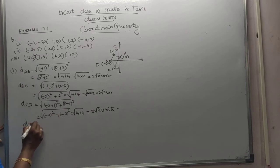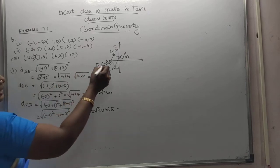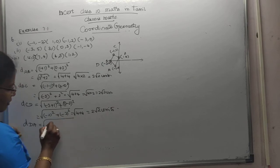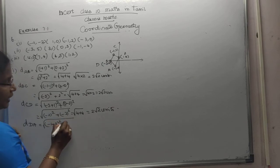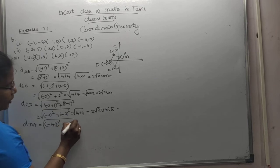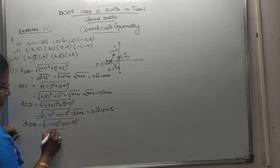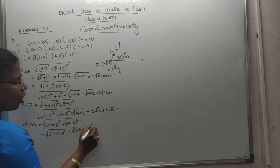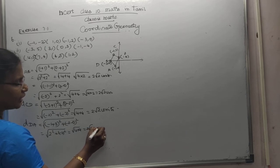Distance of DA. Distance between D and A. A is the same. Minus 1 minus of minus 3, the whole square, plus minus 2 minus 0, the whole square. That is 2 squared plus minus 2 the whole square. That is equal to root of 4 plus 4. This shows all the sides are equal.